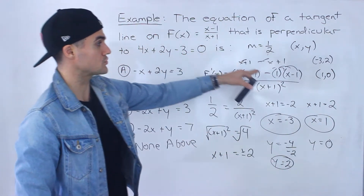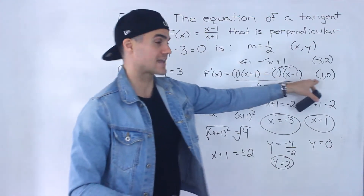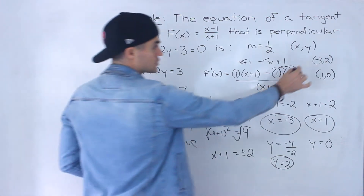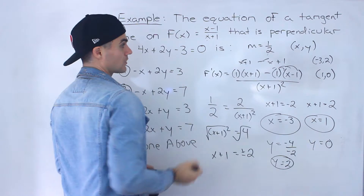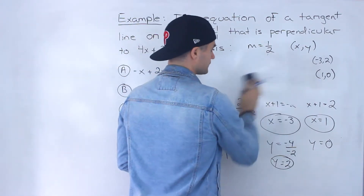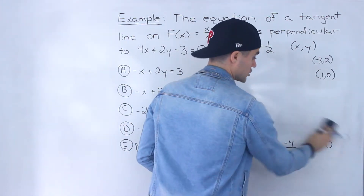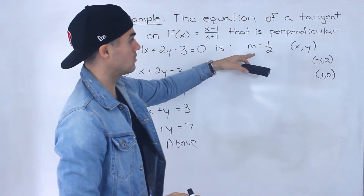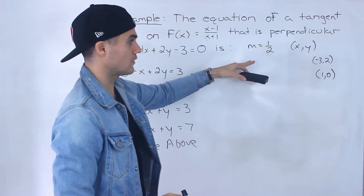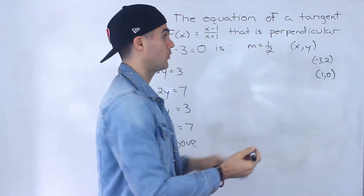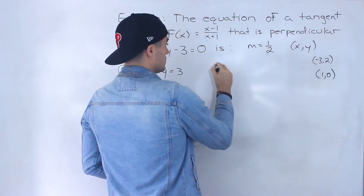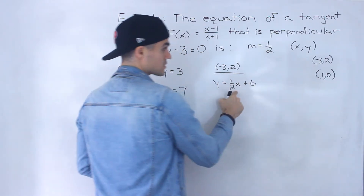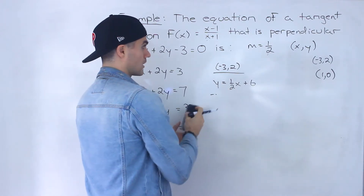The slope of the tangent is 1 over 2 at the function's x-intercept, which is at (1, 0). These are the two points where the tangent slope is 1 over 2. Even though both tangents have the same slope, they'll have different b values since they pass through different points. Let's start with the point (negative 3, 2).